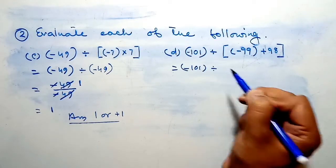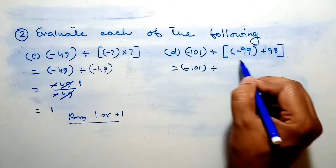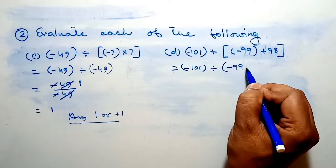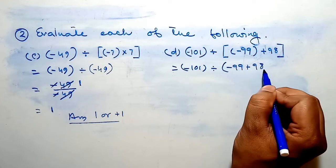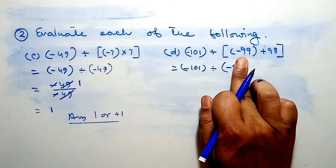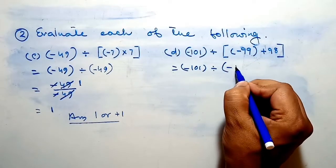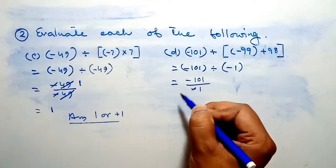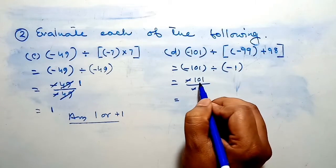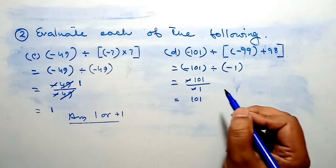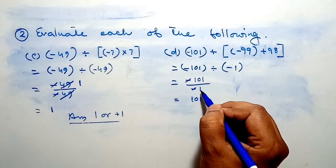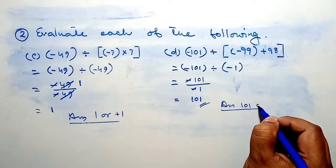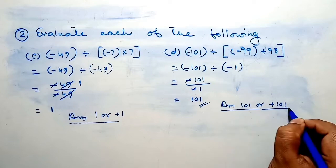Now minus 99 divided by minus 1. Here we solve the bracket part first, following the order of operations. Therefore minus 99 plus 98, and when we subtract we get minus 1. Now minus 1 divided by minus 1 — this minus and this minus cancel — and the answer is 101. So the answer is 101, or positive 101.